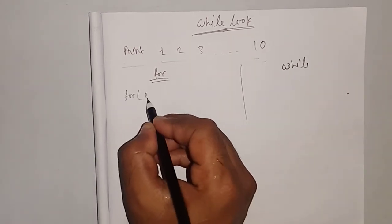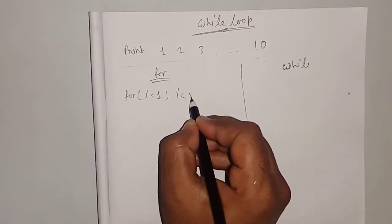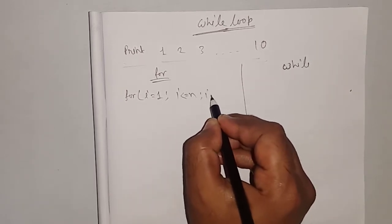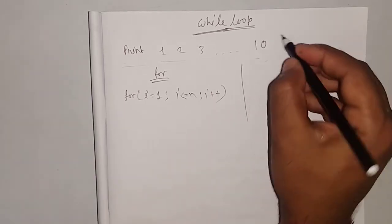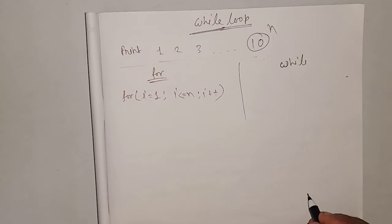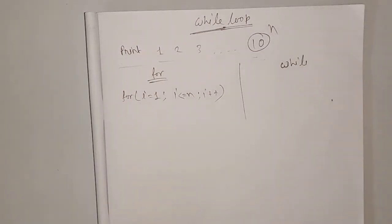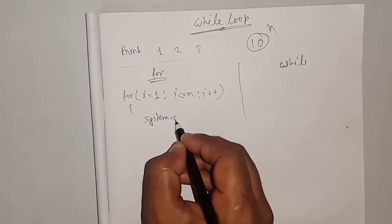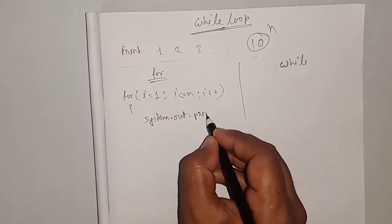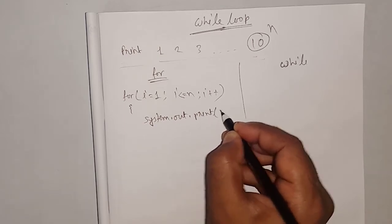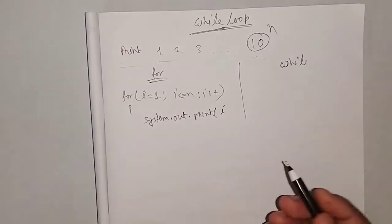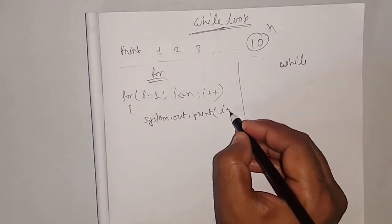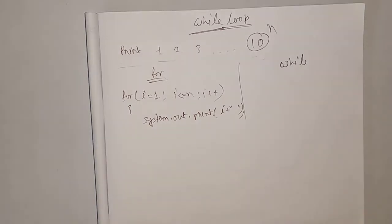In for loop we write: for i is equal to 1, i less than or equal to n, i plus plus. This n means I am considering n — if n is equal to 5 then up to 5, n is equal to 10 then up to 10, n is equal to 19 then up to 19 I will print. Now system.out.print — I print value of i which is 1, 2, 3, 4, 5. Then I'm giving a blank space for better output. Then my for loop is over.